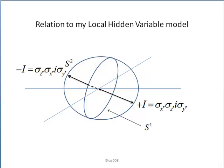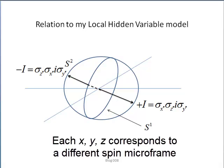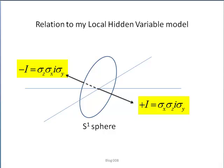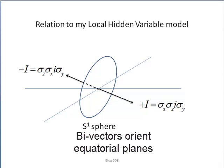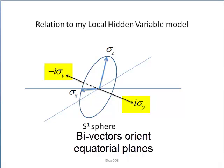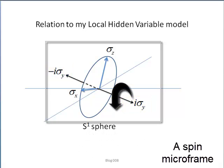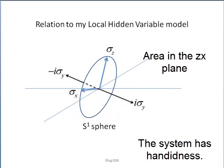There are an infinite number of planes, and if you have read my blogs six, seven and eight, then each change of coordinate corresponds to a different spin orientation and a different spin microframe xyz. Topologically, the two-sphere S2 is made up of an infinite number of equatorial planes which are one-spheres S1. Whereas Christian uses the trivector in S2 to orient a spin, the two-dimensional sub-quantum spin I have talked about uses a bivector in S1 — like this. So now we see the two-dimensional spin oriented in its microframe. I have used a right-hand rule here, so we see that this system has handedness as well as magnitude: the plane zx and orientation by the bivector i·sigma_y.